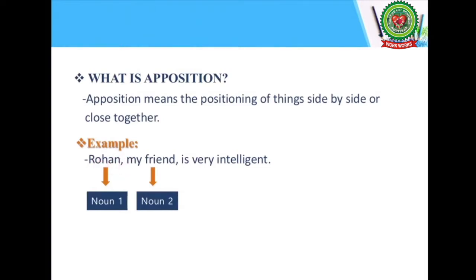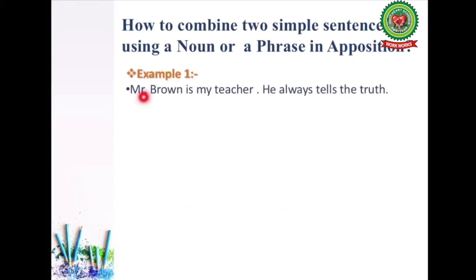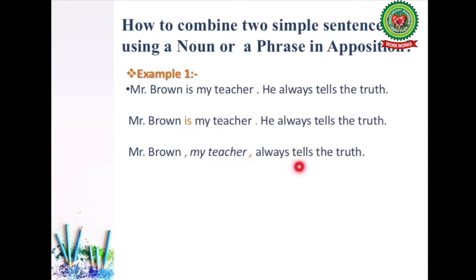Now let's see how to combine two simple sentences using a noun or phrase in apposition. Example: 'Mr. Brown is my teacher. He always tells the truth.' We are talking about Mr. Brown — additional information is that he is my teacher and that he always tells the truth. We take the noun 'my teacher,' remove the verb 'is,' and put a comma in its place. Remove the full stop and put a comma. Our answer: 'Mr. Brown, my teacher, always tells the truth.' We do not repeat the subject in the second sentence.